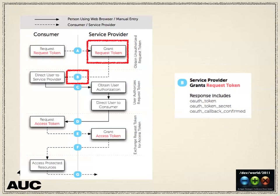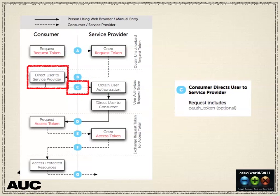After that, the service provider replies with a response giving you a temporary auth token — basically saying 'this is just some temporary stuff so I know it's you.' You get a secret and a confirmed callback. Note on the diagram that dotted lines are requests made between computers — from the consumer application to the service — while unbroken lines are what happens when the user has to do something.